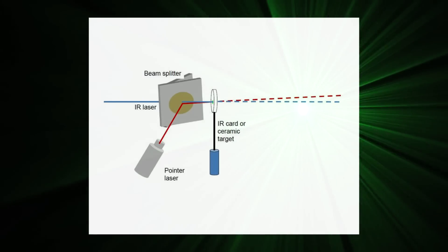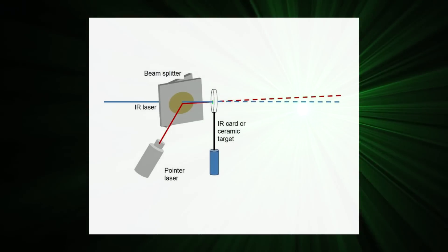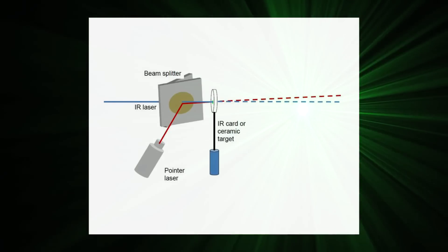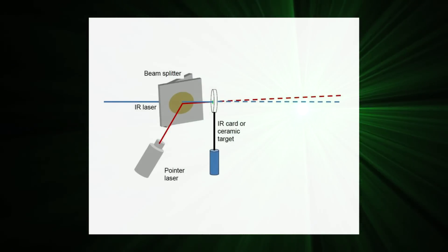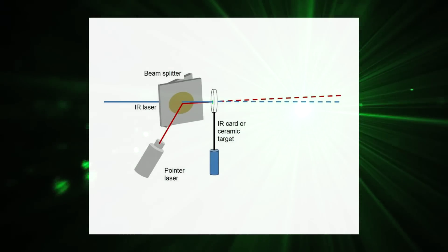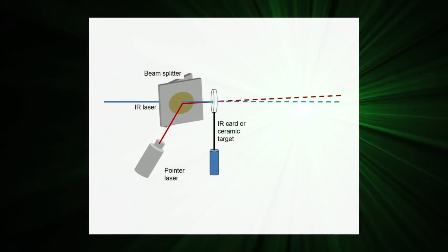We use an infrared phosphor card or a ceramic target to see the spot from the IR beam together with the visible spot from the aiming beam. In this step, we place this IR card close to the splitter, and we adjust the aim of the visible beam so that we bring the two spots on the IR card together. That gives us a preliminary alignment.